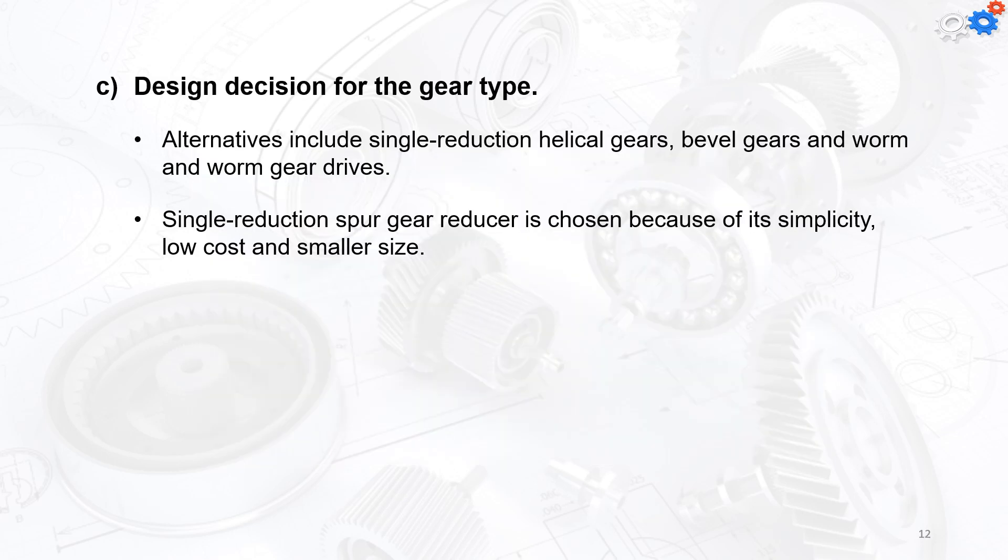For the design decision for gear type, alternatives include using single reduction helical gears, bevel gears, and worm gear drives. A single reduction spur gears reducer is chosen because of its simplicity, low cost, and smaller size.